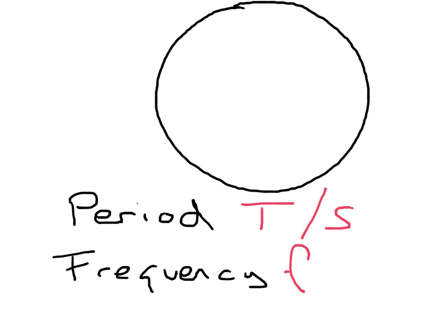Its symbol is F, and it's measured in hertz. You've met that before, probably, when you were talking about waves. So, period is a time, and it's measured in seconds. Frequency is measured in hertz.